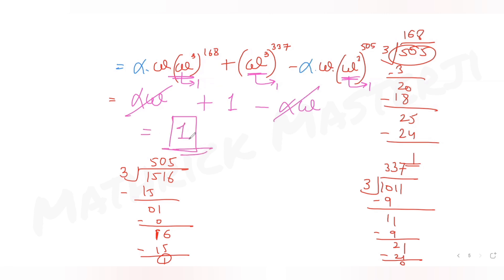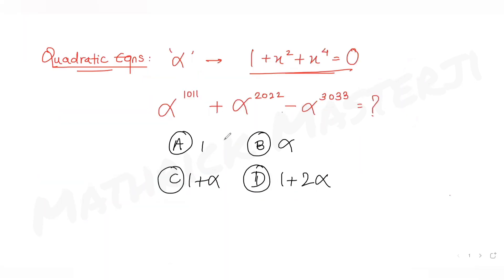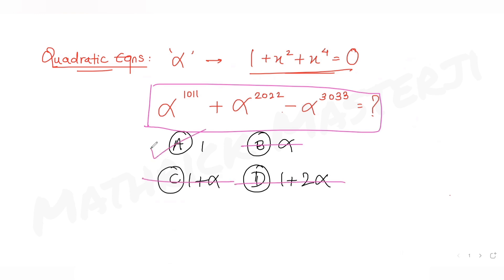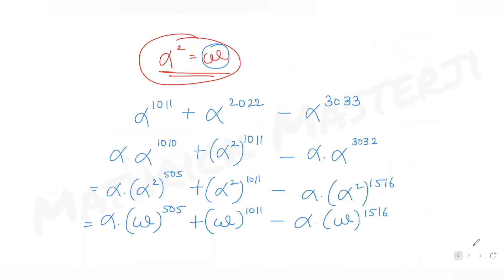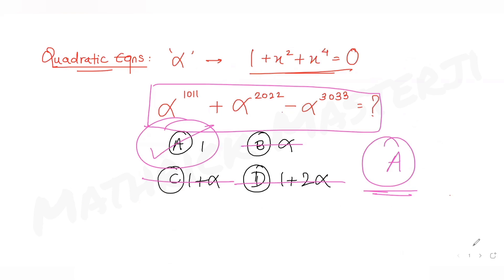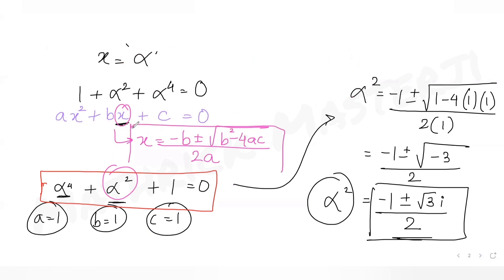So the answer for the expression is 1. Alpha cancelled out, confirming that options involving alpha (like 1 + alpha) are not the answer. The value of the entire expression is 1, which matches answer choice option A. So option A is the correct answer.